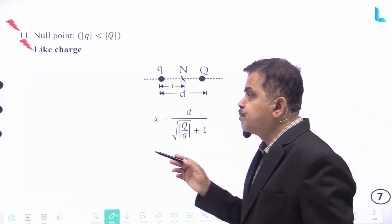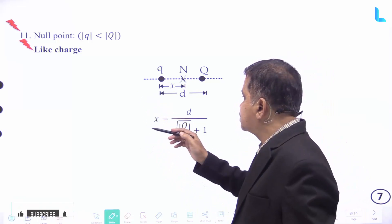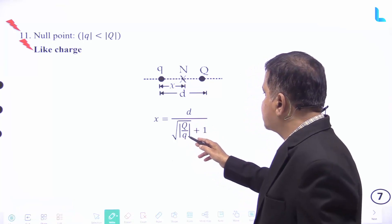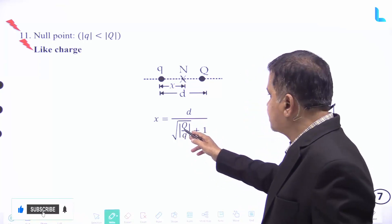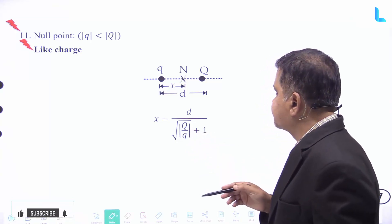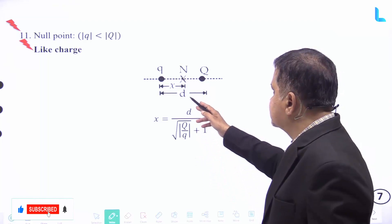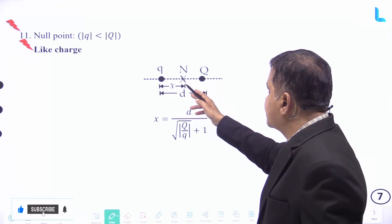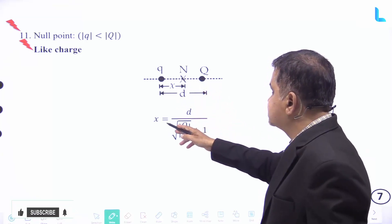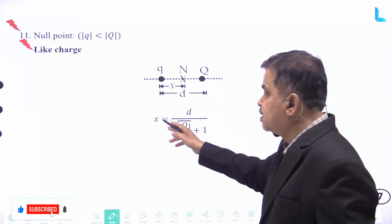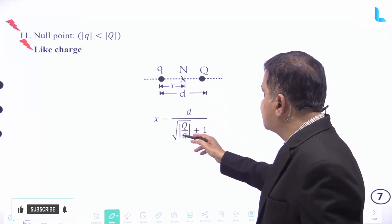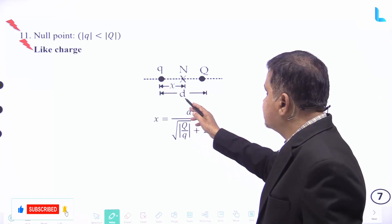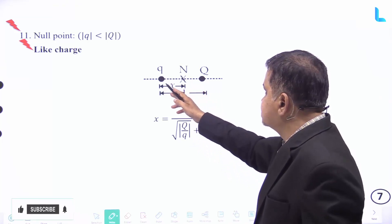The null point for like charges: x is equal to d divided by the square root of the modulus of capital Q divided by q, plus 1, where x is the distance from charge q, d is the distance between the two charges q and capital Q. The null point exists between the two like charges.